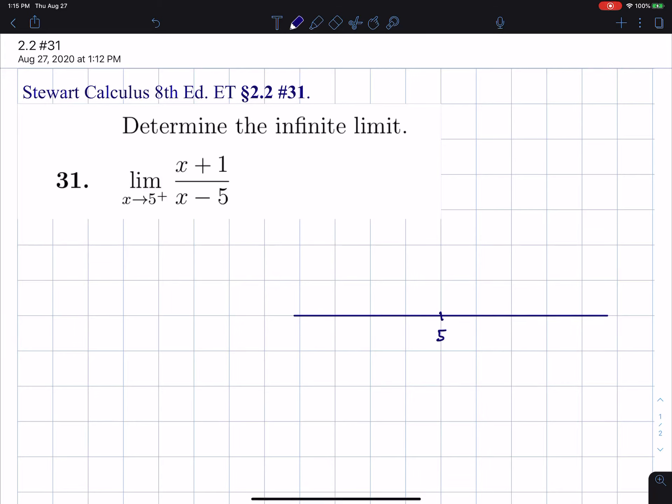So we're coming from the right. Now notice, if we put in x equals 5, we get 5 plus 1 over 5 minus 5, which makes 6 over 0. Now 6 divided by 0 is undefined, we know that.